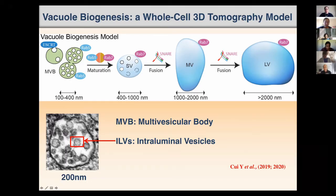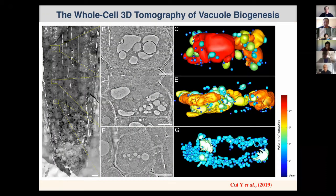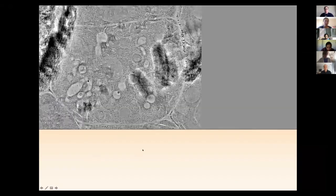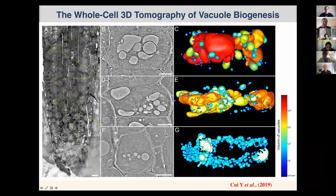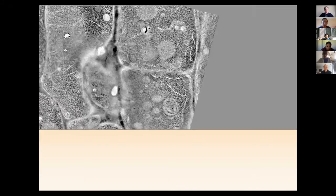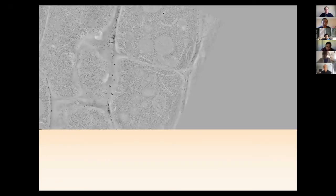How did we arrive at this model? On the left is a section through root cells — cells one, two, and three — showing vacuoles of different sizes: small, medium, and large. On the right is the electron tomography. The vacuoles are color-coded: red for larger size, green for smaller. I'll show you one example — this is the tomography model for a single cell, and you can see many small individual vacuoles largely separated from each other.